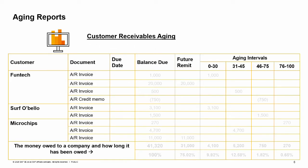The customer receivables aging report shows all open transactions — unreconciled — of customers, typically AR invoices, and how long they are overdue. This is a key report for monitoring customers' debt as well as evaluating the credit quality of customers.